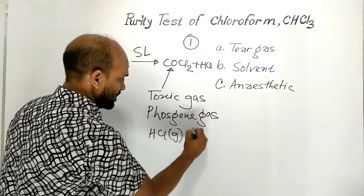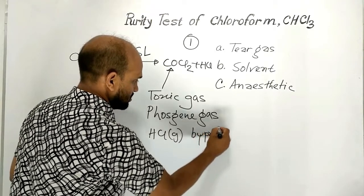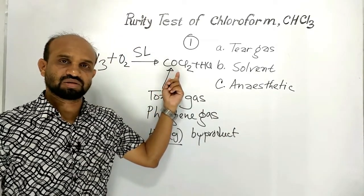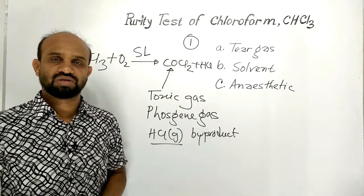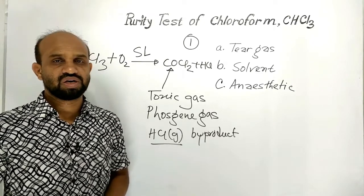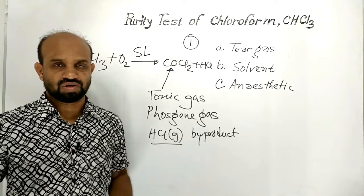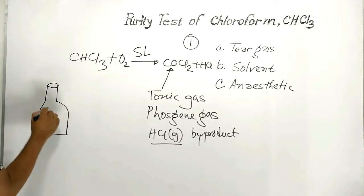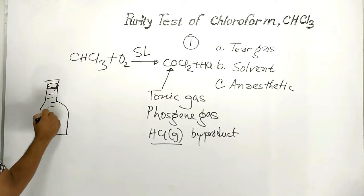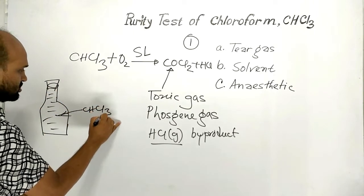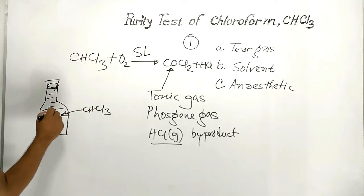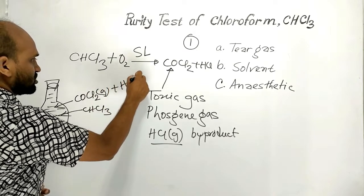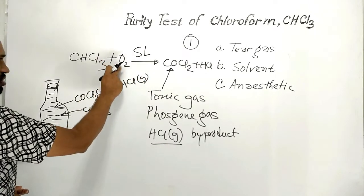Because of the presence of toxic carbonyl chloride gas, the pure form of chloroform is essential. How can we measure the purity of chloroform? Suppose this is a bottle with chloroform — if it is impure, then it contains carbonyl chloride gas and hydrogen chloride gas through oxidation of chloroform in the presence of sunlight.